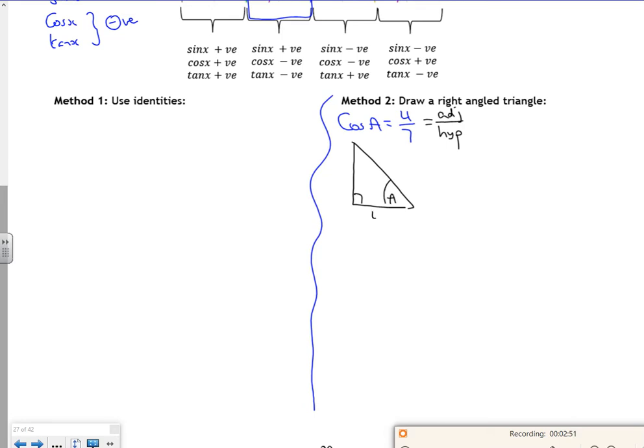My adjacent is 4, my hypotenuse is 7, my opposite will be the square root of 7 squared minus 4 squared. So my opposite is the square root of 33.